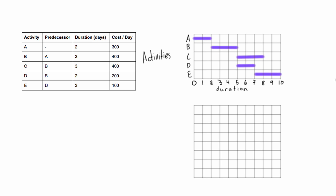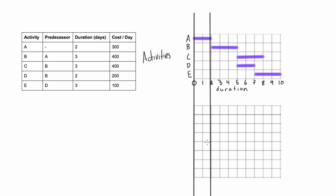When drawing project S curves, the best way is to split up your Gantt chart into a series of periods. These periods are defined by the points where any activity starts or ends. We'll draw vertical lines at those points. The graph for the S curve will be drawn below — stacking them makes everything much easier to manage.